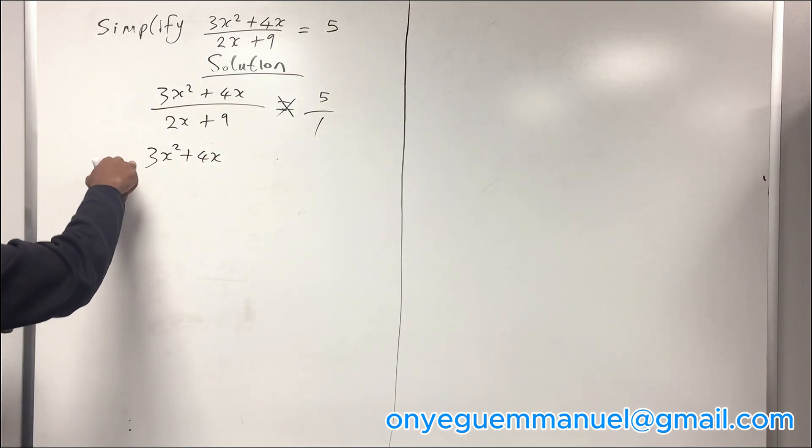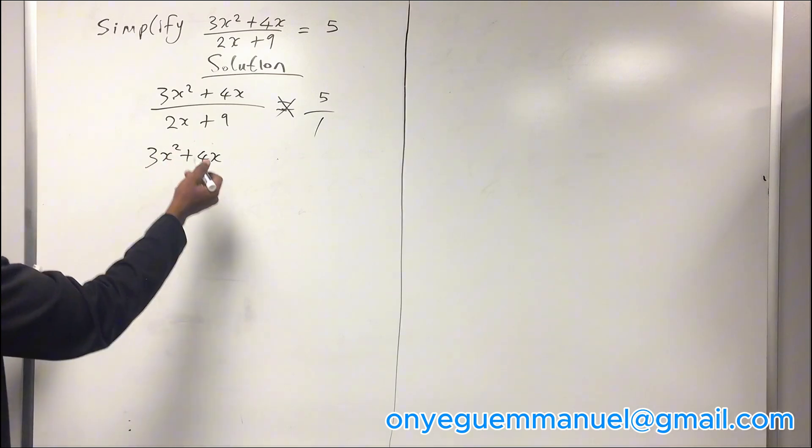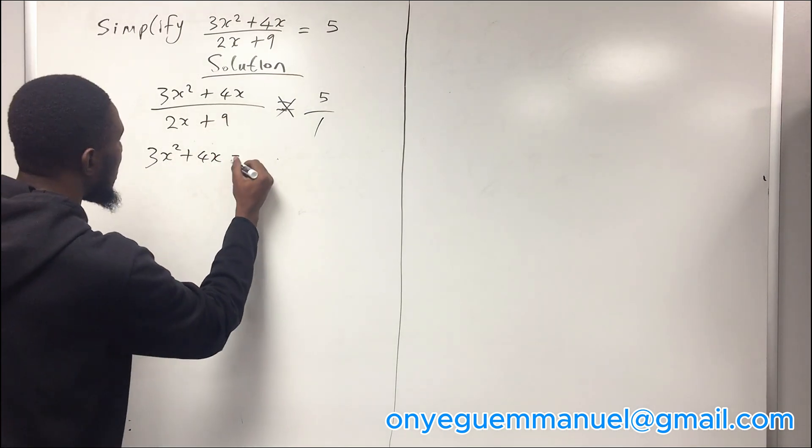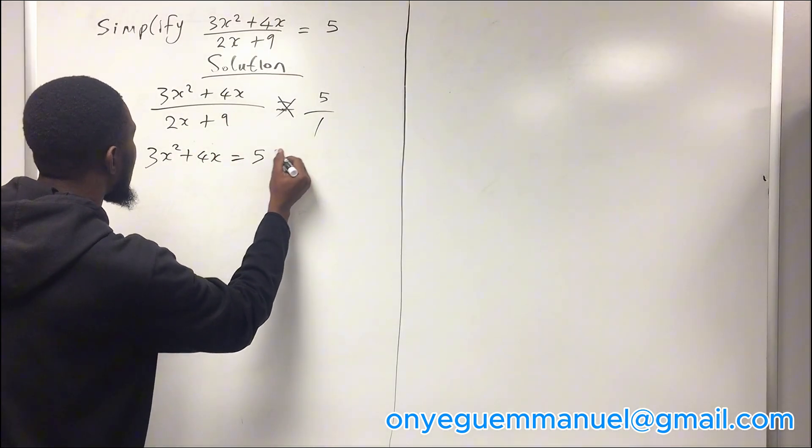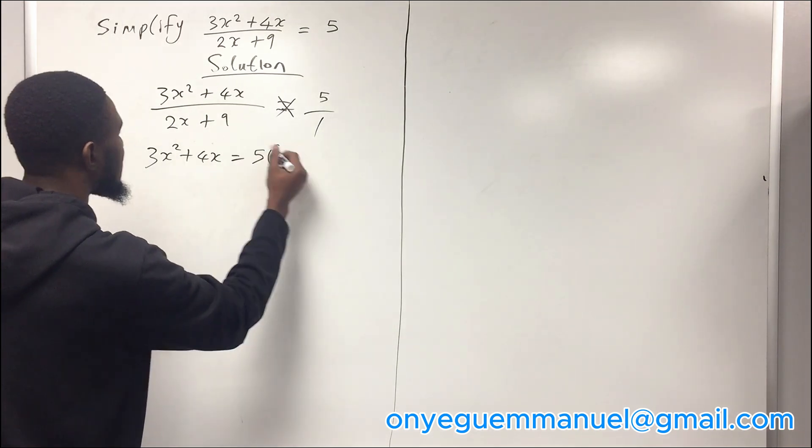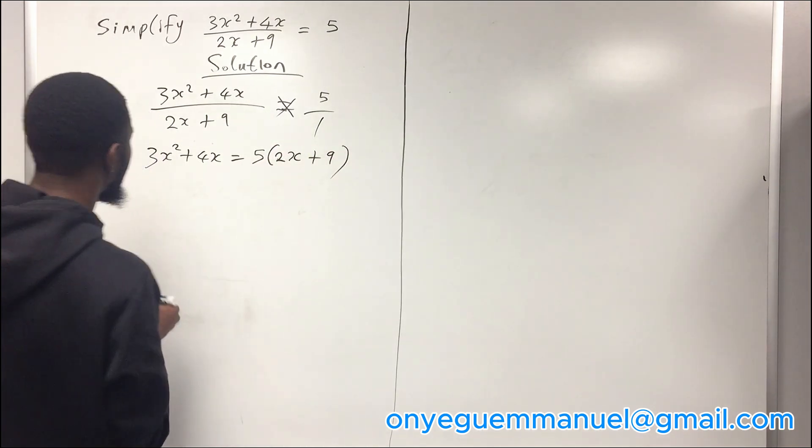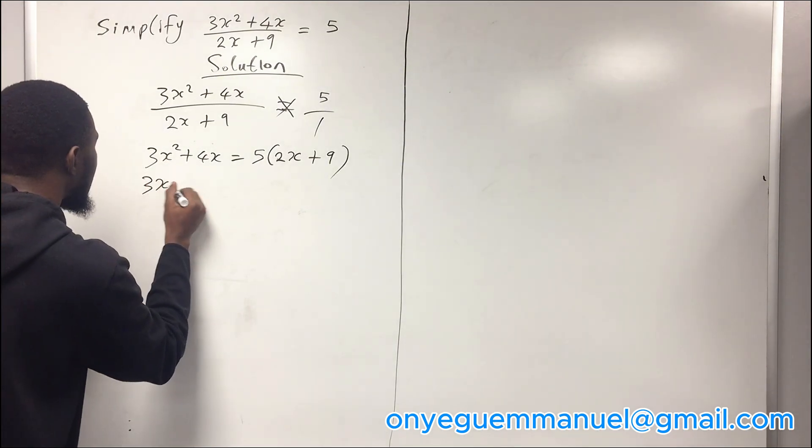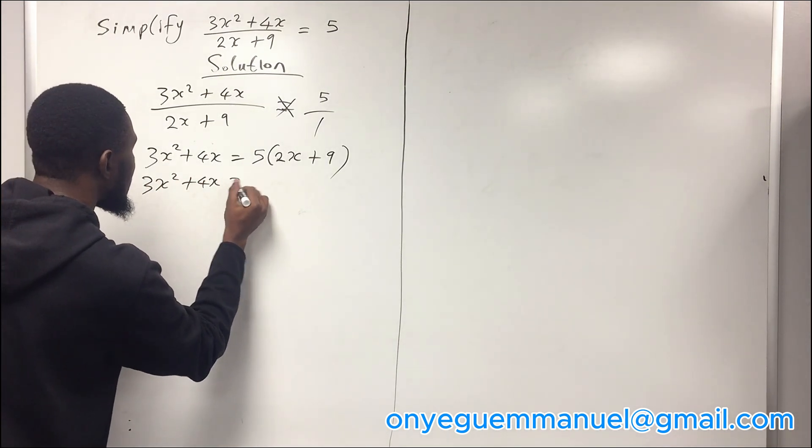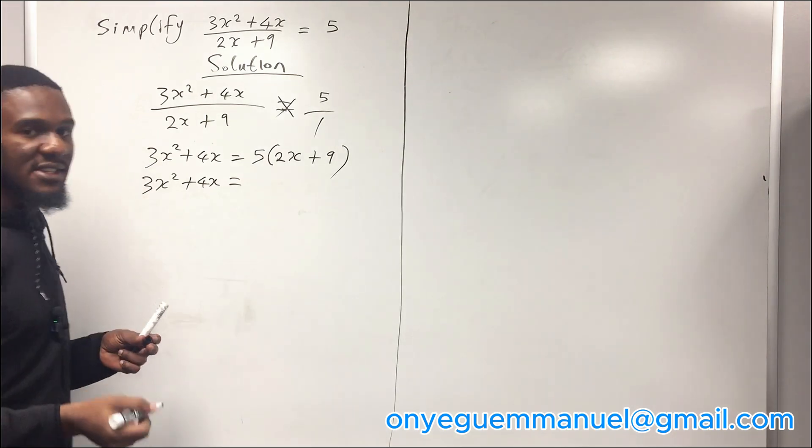You have that 3x squared plus 4x, which because 1 is multiplying this, we leave it this way, equals 5 into 2x plus 9.